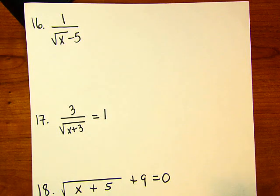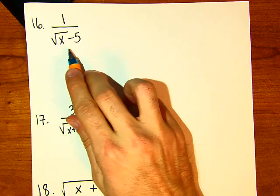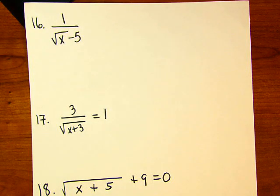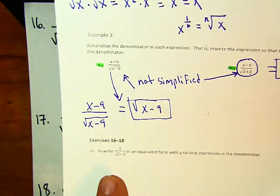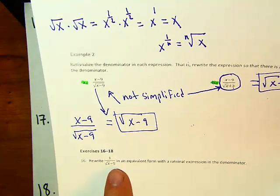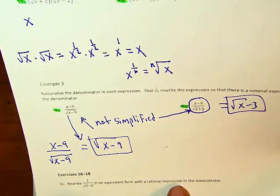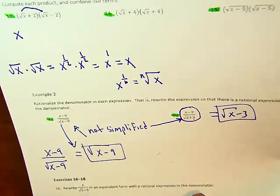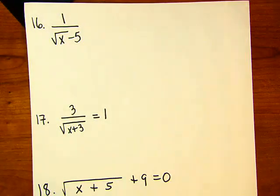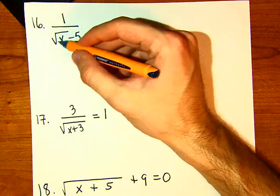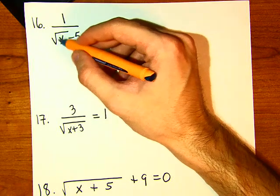Okay, last three questions. Here we have 1 over square root of x minus 5, and the question is asking us to rewrite it in an equivalent form with a rational expression in the denominator. This goes back to the idea from the previous video: we do not want radicals in the denominator.